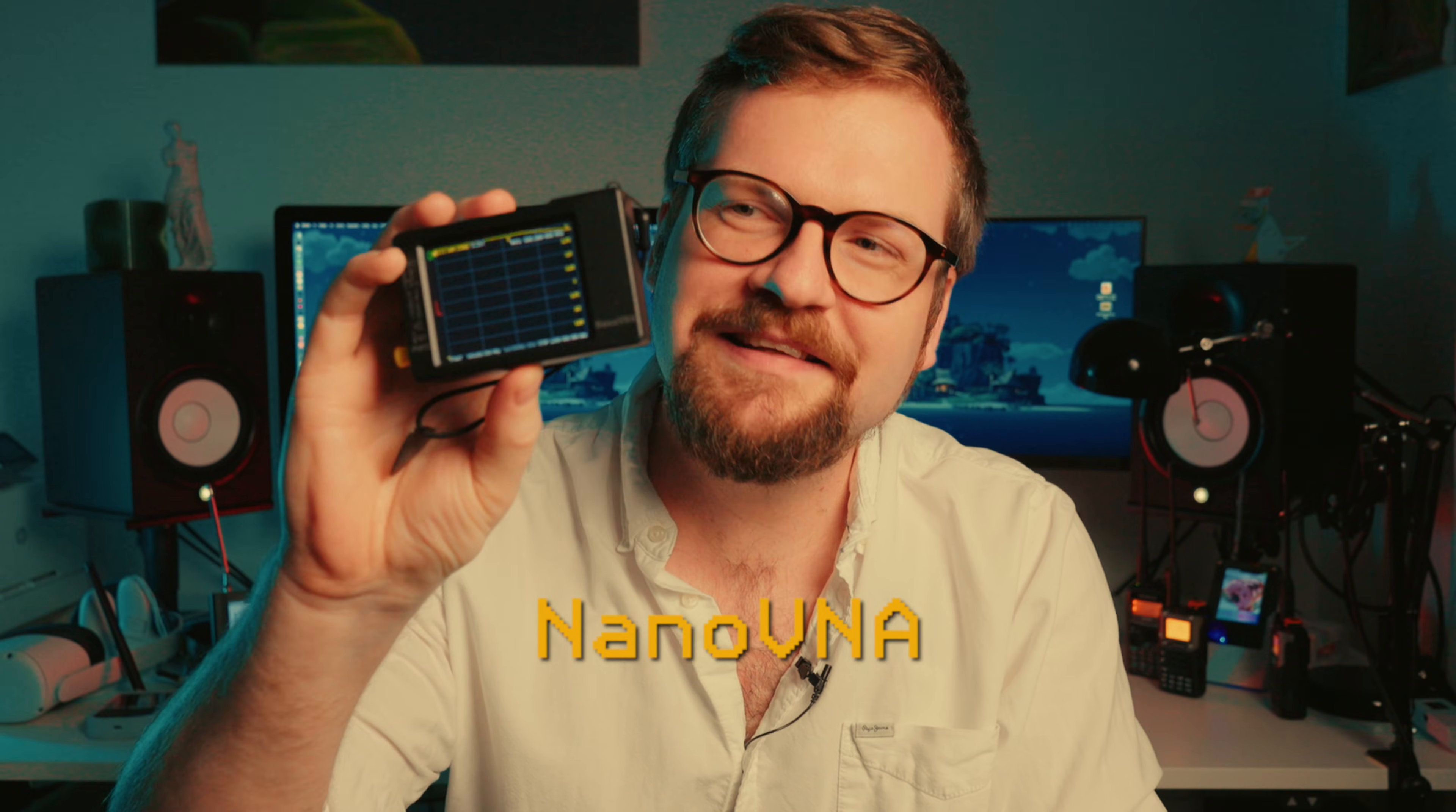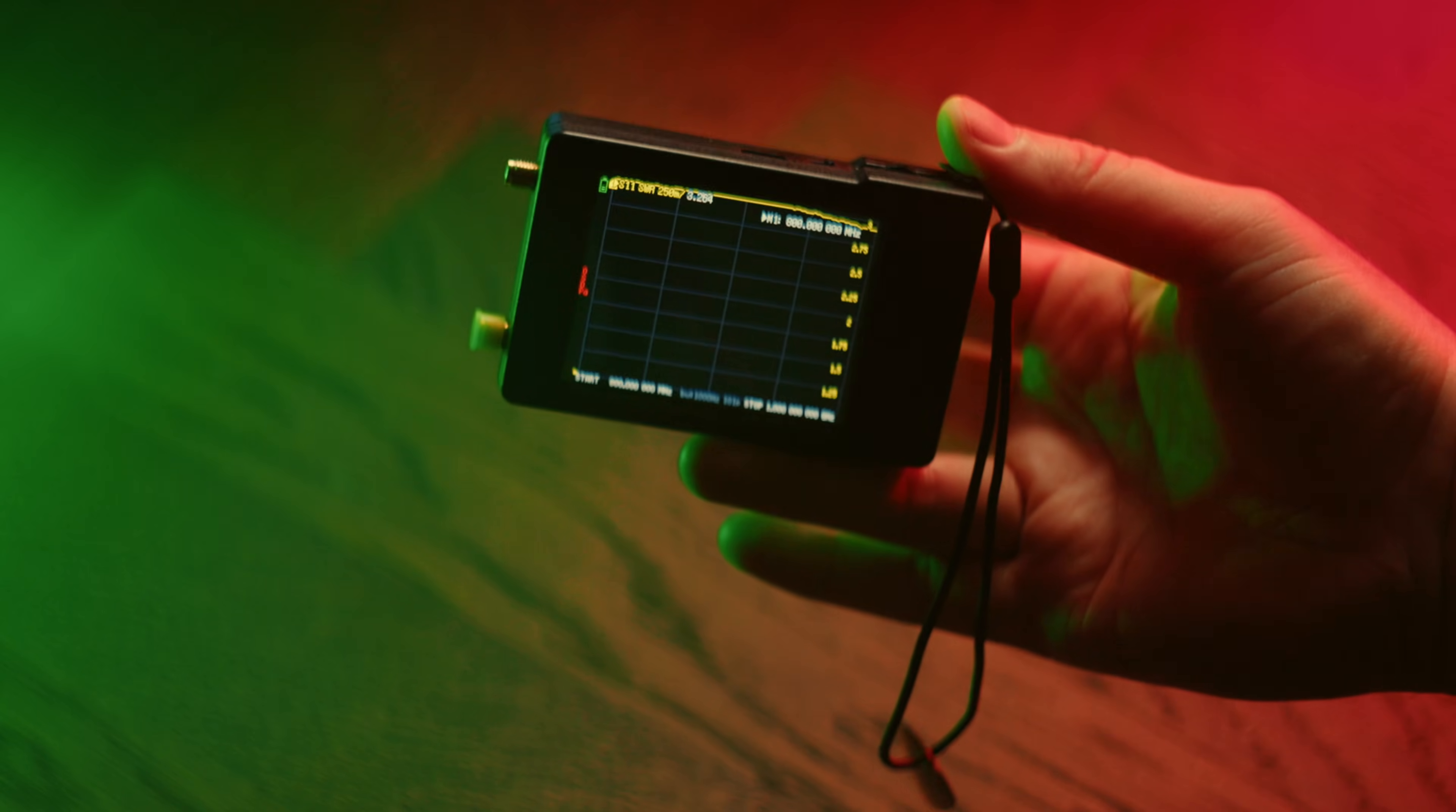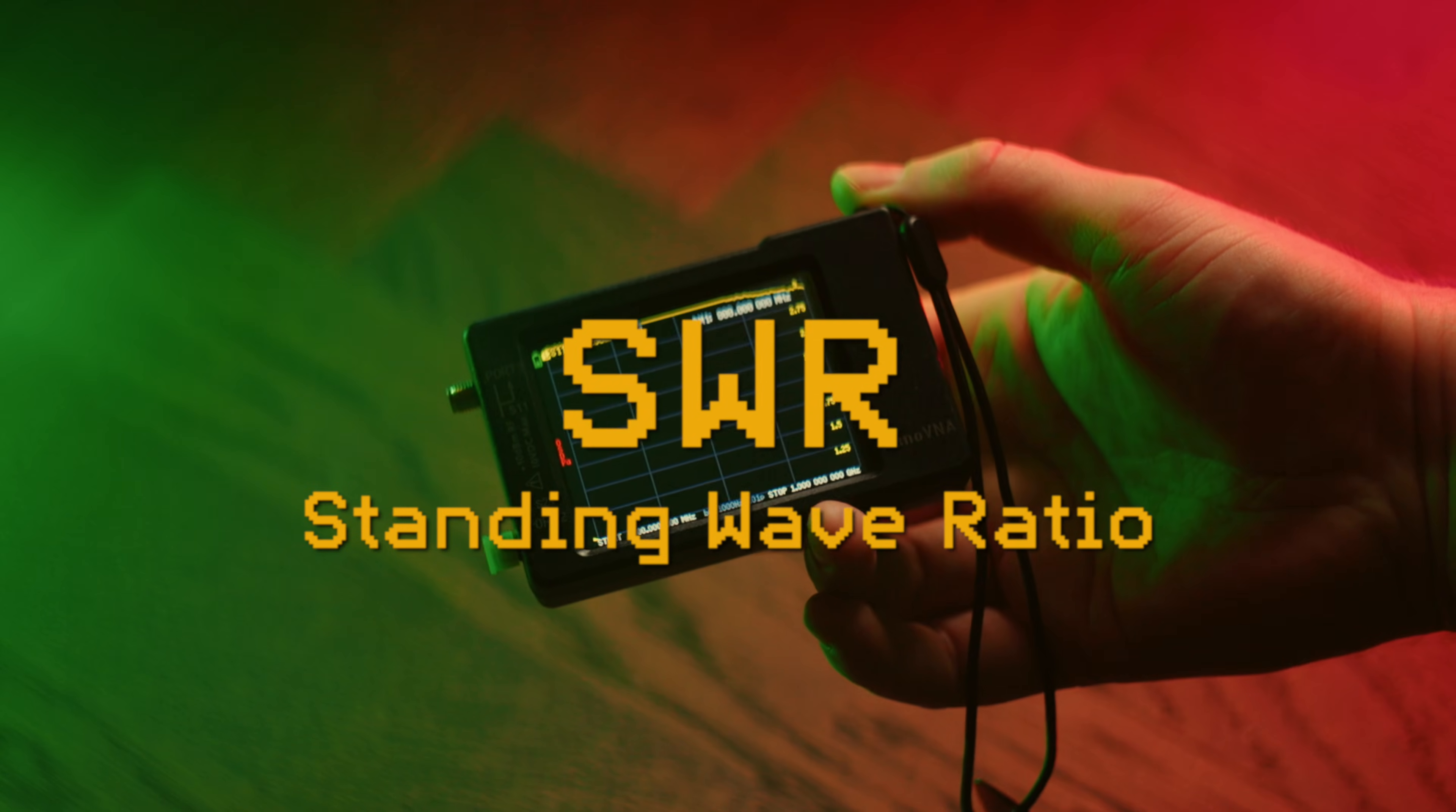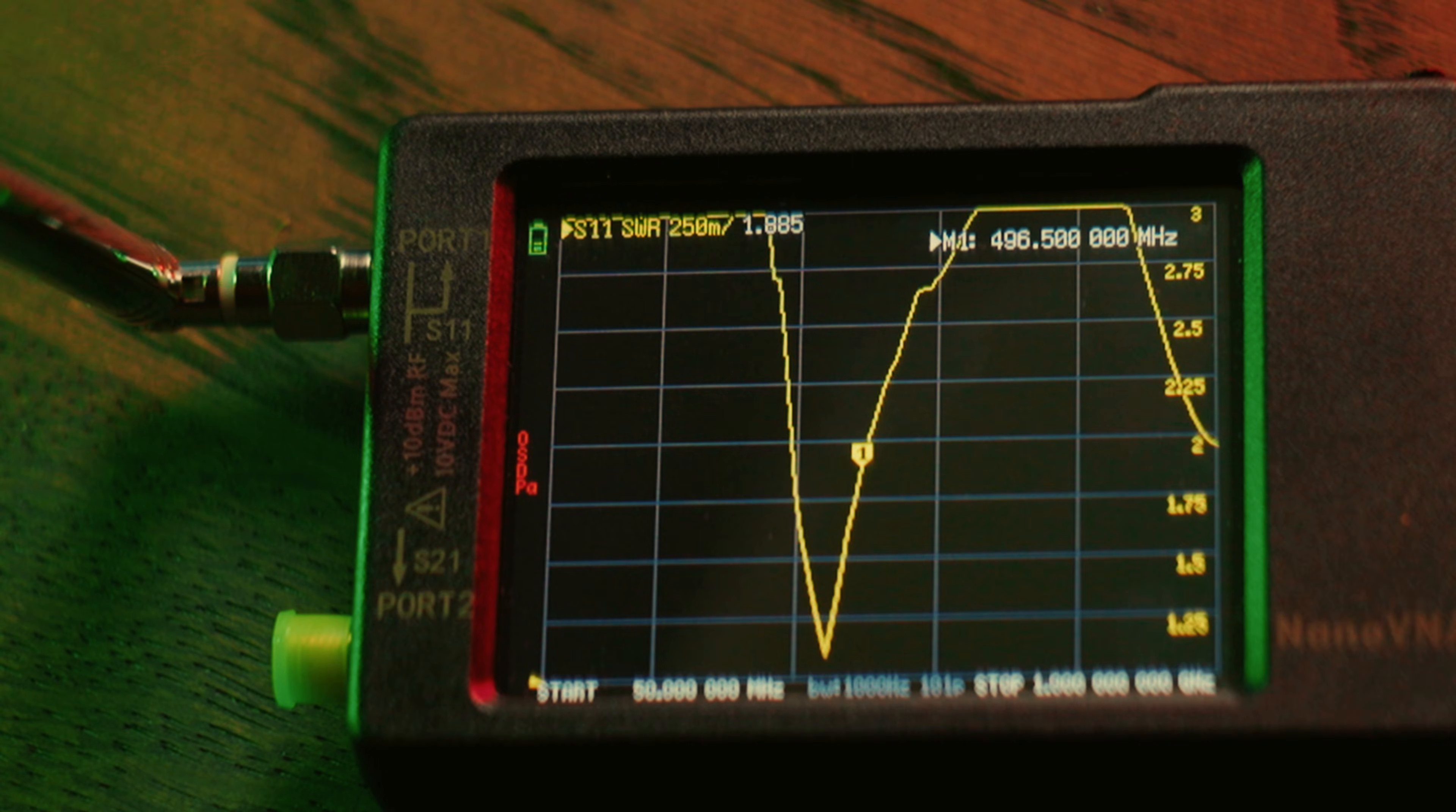We live in an amazing future where what would have been extremely expensive antenna analyzer equipment can now be had for next to nothing. One such device is the NanoVNA, and it is a must-have if you are at all interested in fiddling with antennas. The NanoVNA allows us to measure the SWR, standing wave ratio, of our antenna. The higher the SWR, the worse the antenna resonance is and the more of our transmitted signal is reflected back from the antenna. The NanoVNA can do SWR readings across a wide frequency range, allowing us to see the dip in SWR at the frequency where the antenna is resonant. We can also see that the width of the usable frequency range is fairly narrow.